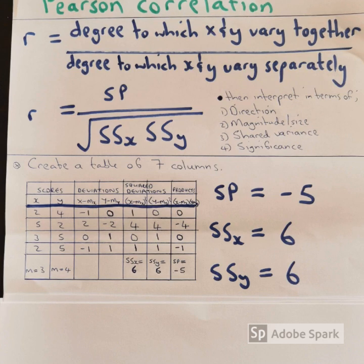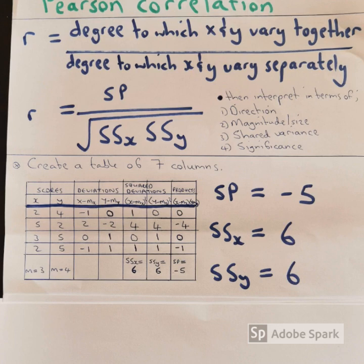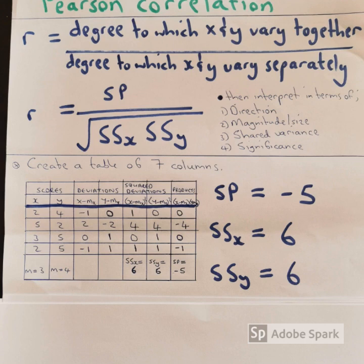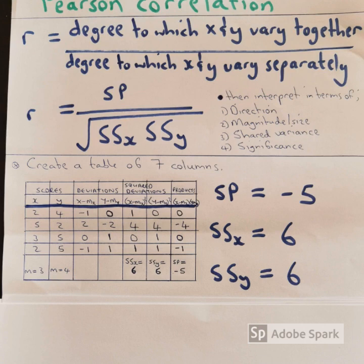So in a test or an assessment or an exam, you're likely to be given two sets of scores for x and y. So what you do, you create seven columns like what I did here. So I'm going to show you how to go about doing that.